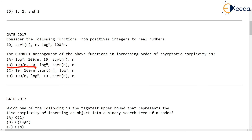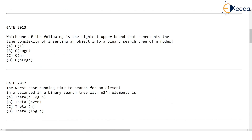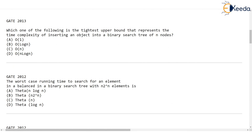Then comes log n, square root of n, and n. It's not very difficult to see that √n is always less than n, and log n is less than √n. So this is the answer for the GATE 2017 question. Let's meet in the next video and see some more questions asked in previous GATE papers on asymptotic notations. Thank you very much.